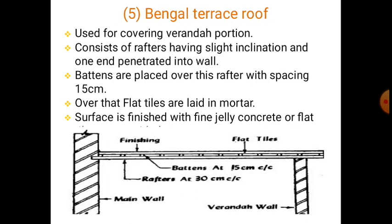This type of roof is commonly adopted in Bengal to cover the veranda, and hence is commonly known as Bengal terrace roof. The construction procedure consists of rafters with a slight inclination penetrated into the wall. Battens are placed over the rafters at 15 cm spacing, flat tiles are placed on top, and the final finish is a concrete topping.